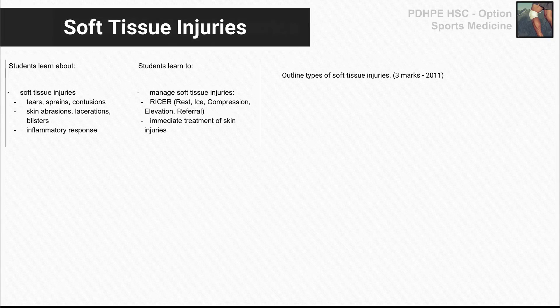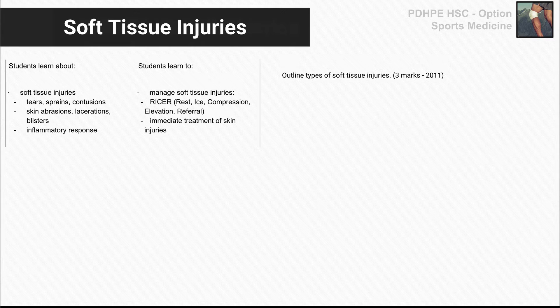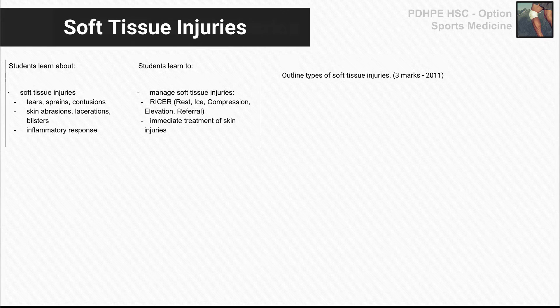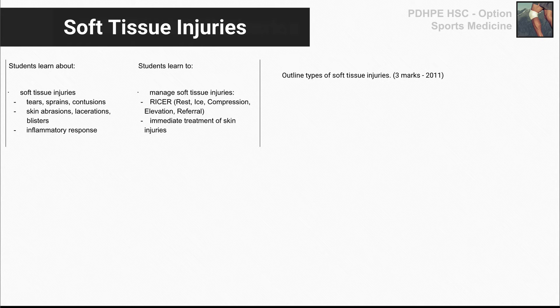The next dot point relates specifically to soft tissue injuries. As you can see, there has been one question asked recently that has been a low mark question. Outline is a key term to take note of and it is assumed you will have a good understanding of the different types of soft tissue injuries listed in the syllabus.